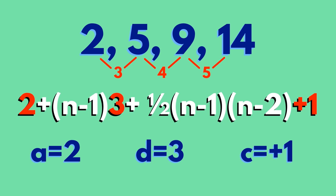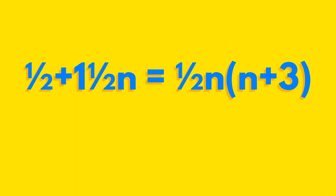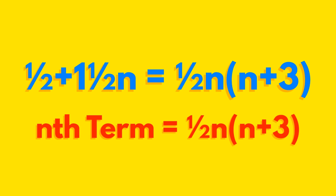Putting these into the formula gives us... This becomes... Which simplifies to this. The nth term is half n times n plus 3.